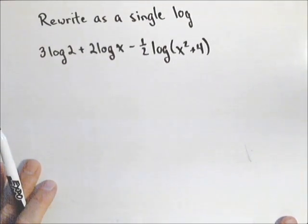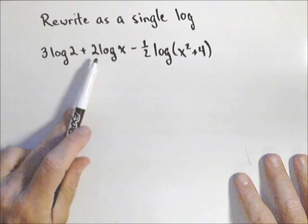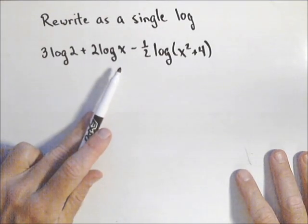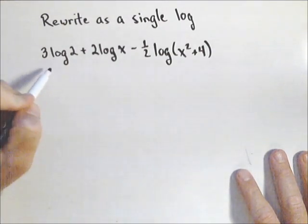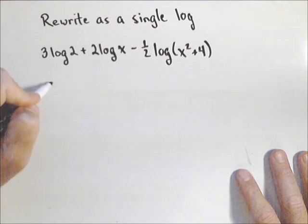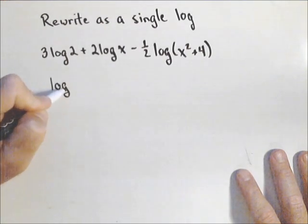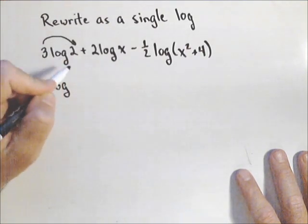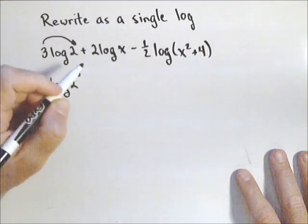First thing you need to do is anything that's out in front of a log needs to be written as an exponent. So right here, this needs to become log of 2 cubed.